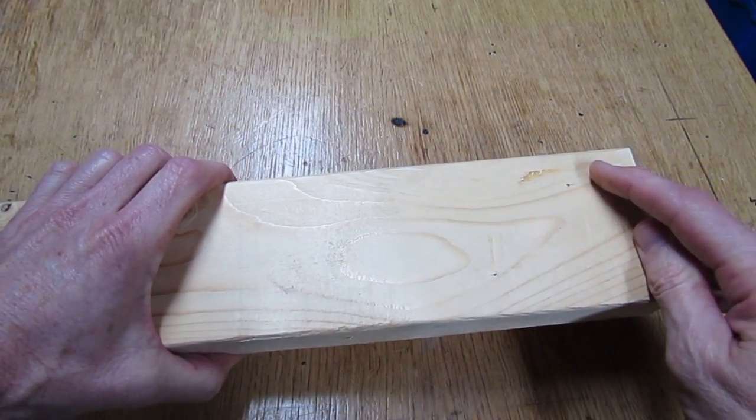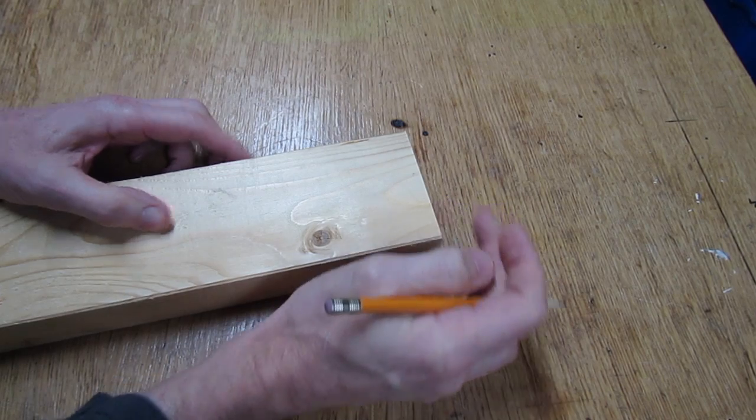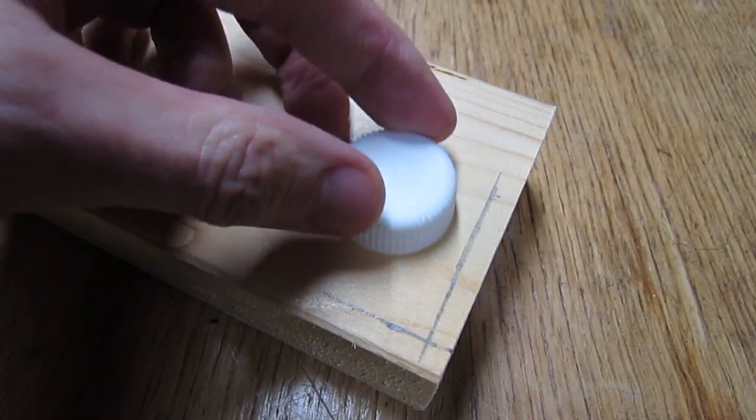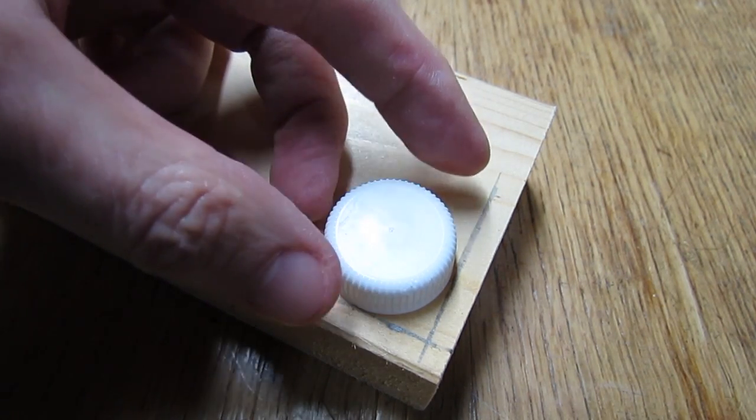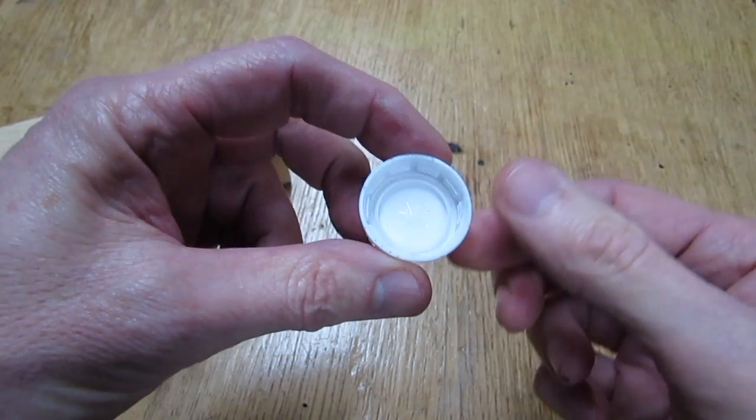Next, take your measuring tape and measure in a quarter of an inch from one of the sides and the end. Now take one of the caps and place it close to the lines and draw yourself a circle. So these caps are an inch and a quarter wide, so you'll need a drill bit that can drill an inch and a quarter hole.